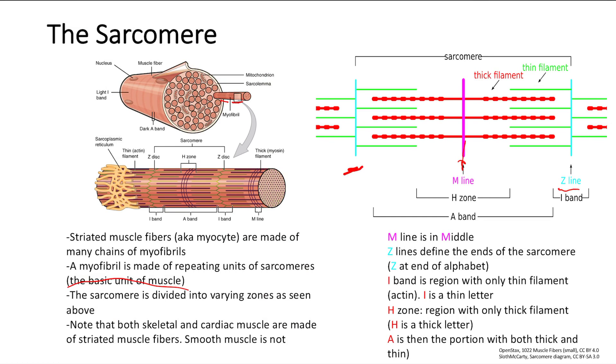The I band is the region - I band is right here - with only covering thin filaments. So thin filament is this green stuff. Remember what that was? That was actin. It's the I band. So I is a thin letter, so I is the region with only the thin filaments.